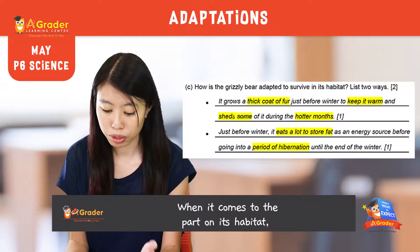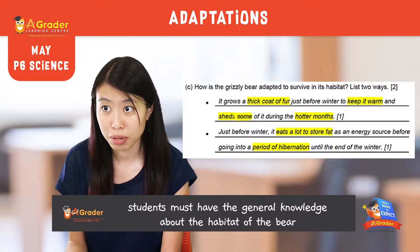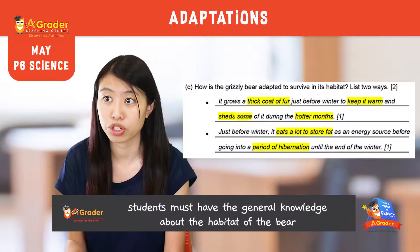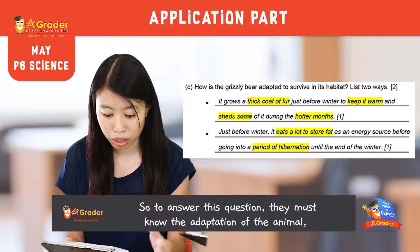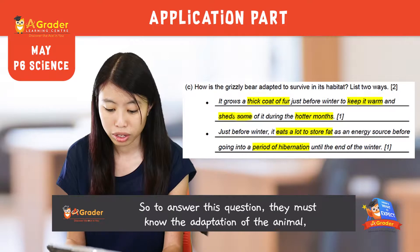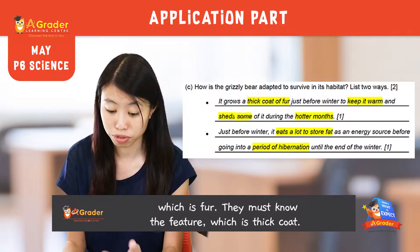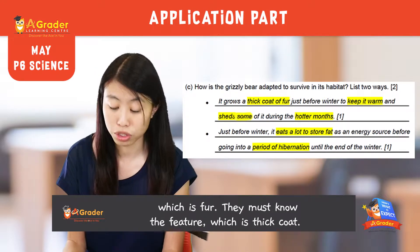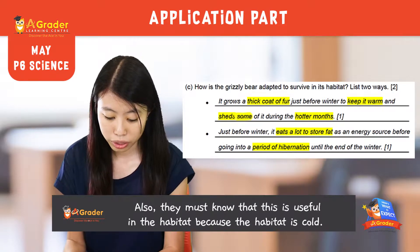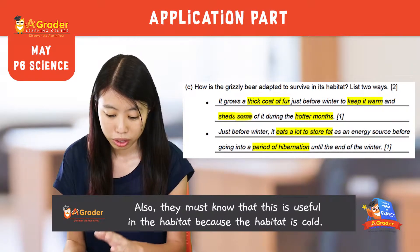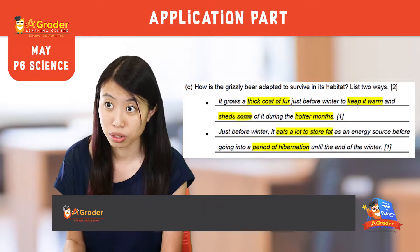And when the question is related to habitat, which is part one, students must know and have the general knowledge of the habitat of the animal. For example, for 'how', they must know the adaptation of the animal, which is fur. They must know the feature, which is a thick coat. And they must know that this is linked to the habitat because the habitat is cold.